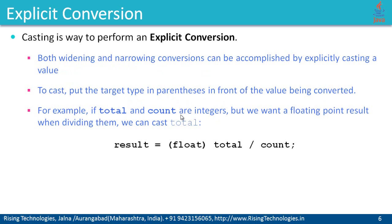For example, if total and count are integers but we want a floating-point result by dividing them, we can cast total something like this. I am going to say: result = (float) total / count. This is the expression, and the outcome of this expression should be converted to float. This is the syntax to cast a value into a desired type.